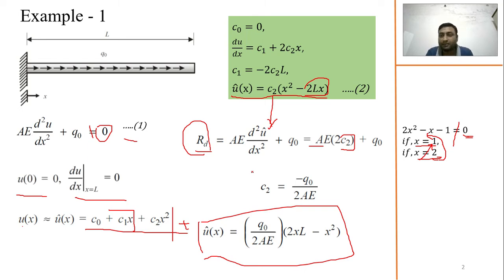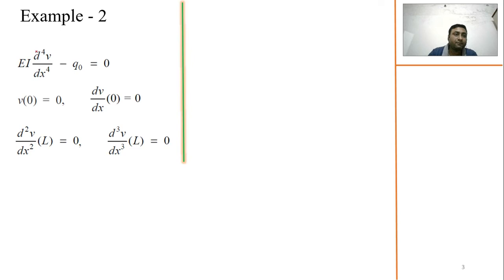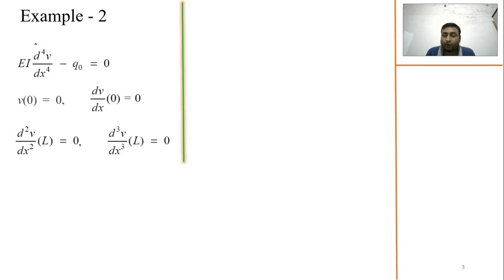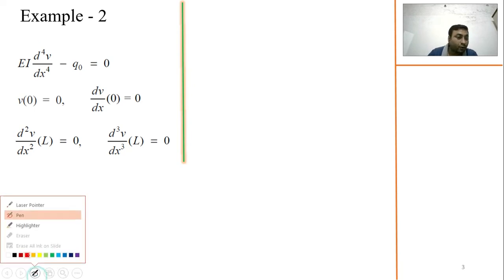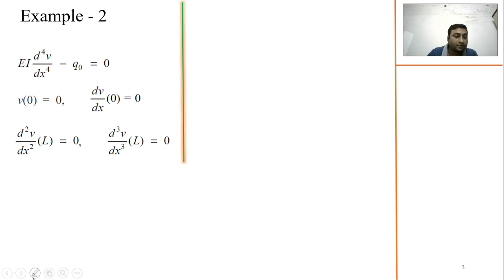Now let's look at the second problem, which has a fourth-order derivative. When you integrate it, you integrate four times, getting constants c₁, c₂, c₃, c₄. For the point collocation technique, since the order is four, the assumed polynomial degree must also be four: û = c₀ + c₁x + c₂x² + c₃x³ + c₄x⁴. You can take a higher degree, but minimum must be four, as discussed in the previous question.